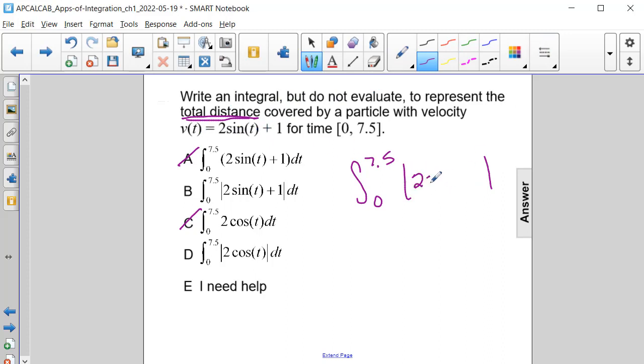So we have 2sin(t) + 1 inside the absolute value, and we're going to integrate this with respect to t. That matches answer choice B.